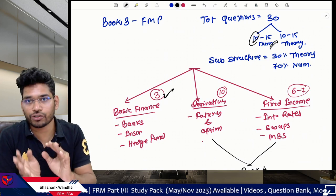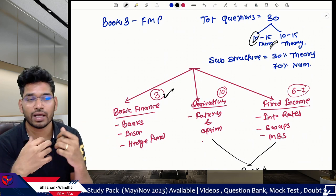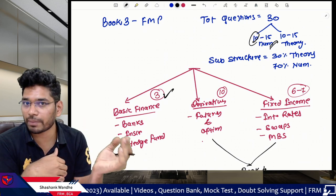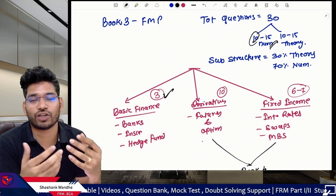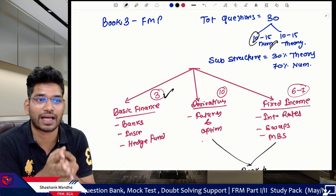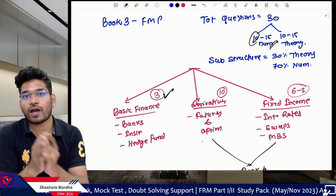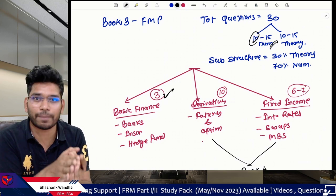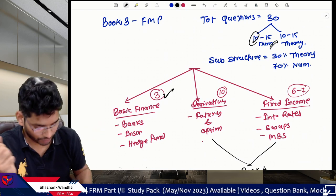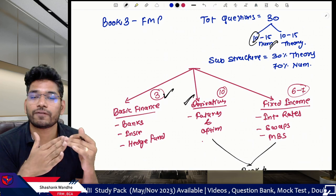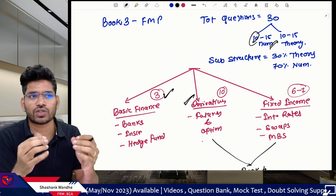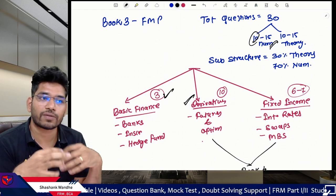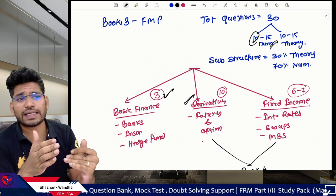If you are new to the finance industry and don't understand commercial banking, insurance companies, or hedge funds, start your preparation with those first three topics — banking, insurance, and hedge fund. If you already know these concepts, skip them. Theory topics should ideally be prepared closer to the examination, because if you read them too early you won't remember them near the exam.